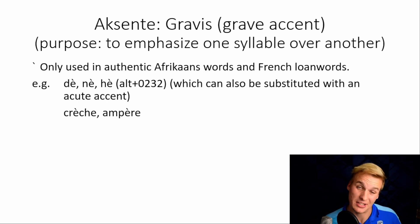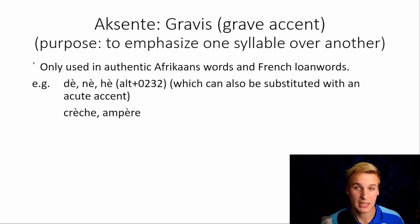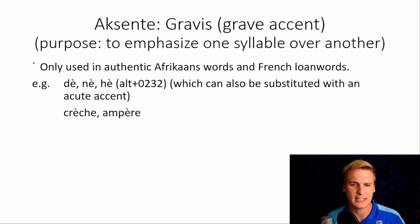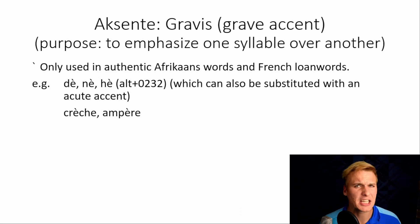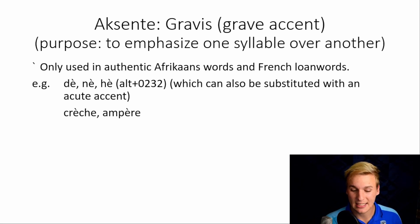The grave accent is the other accent and has the exact same purpose. The only places we use it, however, is in authentic Afrikaans words as well as French loanwords. For example: dè, nè, and hè. You can substitute the grave accent for the acute accent, but you cannot substitute the acute accent for the grave accent. Dè is used when we say 'give me something.' Nè is used when we try to have someone affirm what we're saying — 'Dié seun is 'n mens, nè?' — 'The boy is a person, right?' Hè means 'what?' or 'eh?' It's also used in French loanwords like crèche and ampère.